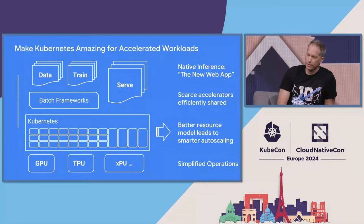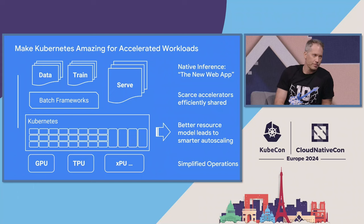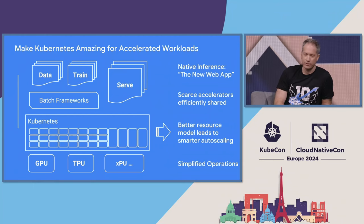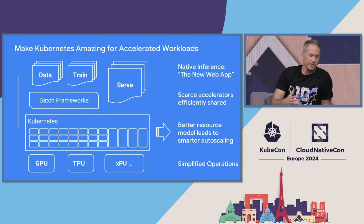There's exciting work going on in a number of SIGs around abstracting the resource model, making accelerators easier to run, and exposing the details that platform admins need. Above that, that's going to lead to better opportunities for scheduling and bin packing, keeping those really expensive accelerators working. Kubernetes has always been about running multiple workloads together, which helps people achieve significant efficiency. On top of those accelerators and a better resource model, we need to bring batch frameworks like Slurm and Ray closer to Kubernetes.